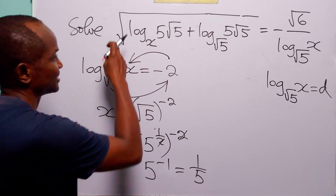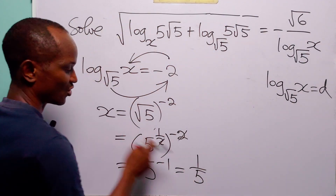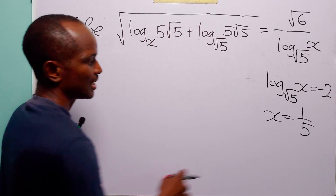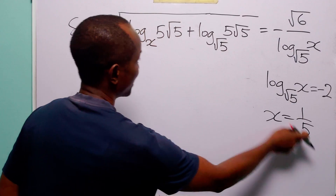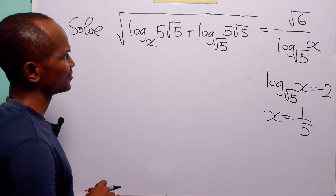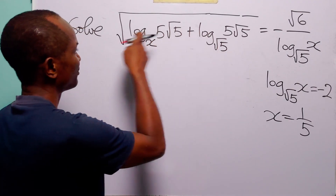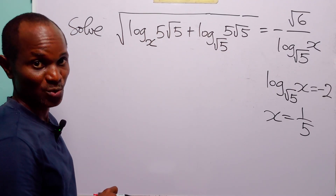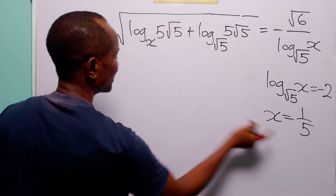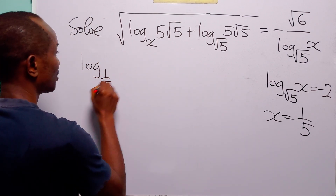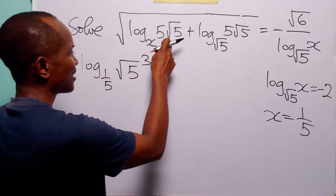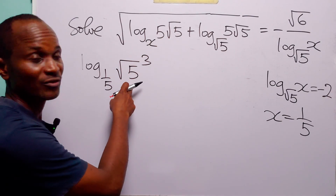So the value of x that satisfies this logarithmic equation is 1 over 5. Now to check our answer, let us substitute 1 over 5 for x into the original equation. We will evaluate the two terms before introducing the square root. Here we have log to base 1 over 5 of root 5 cubed — remember that 5 root 5 is root 5 cubed — plus 3.